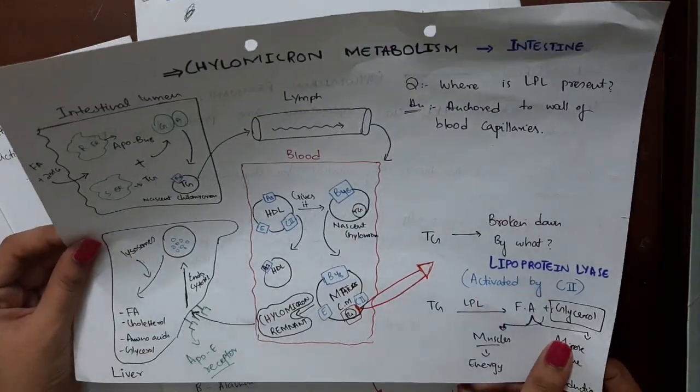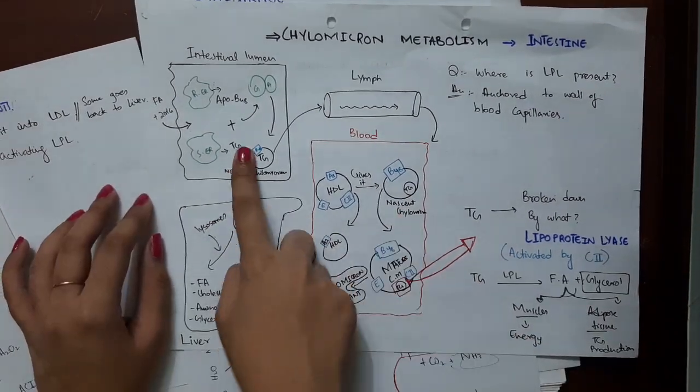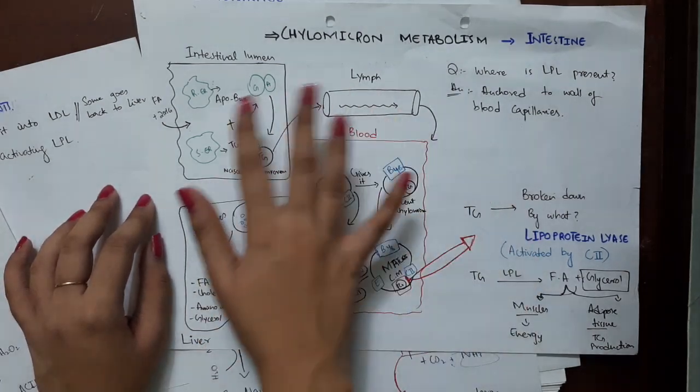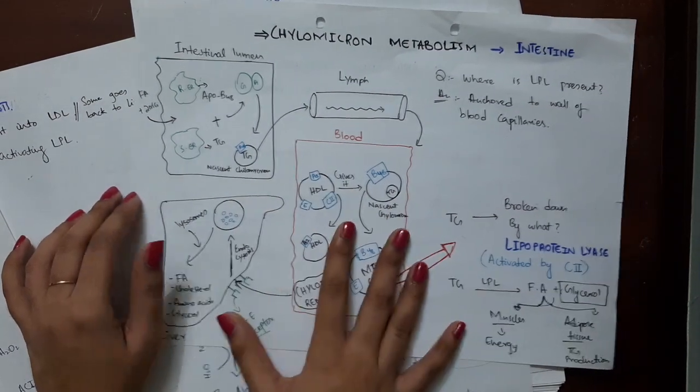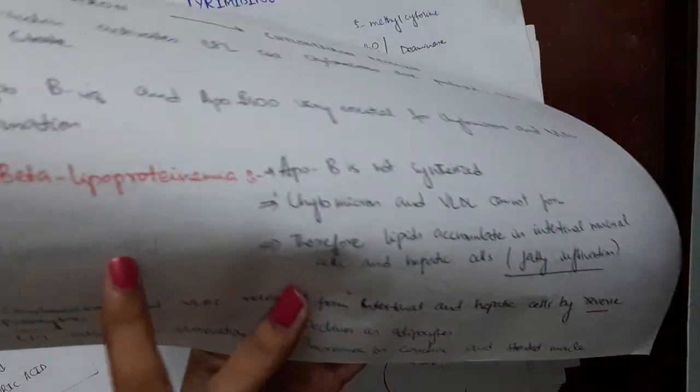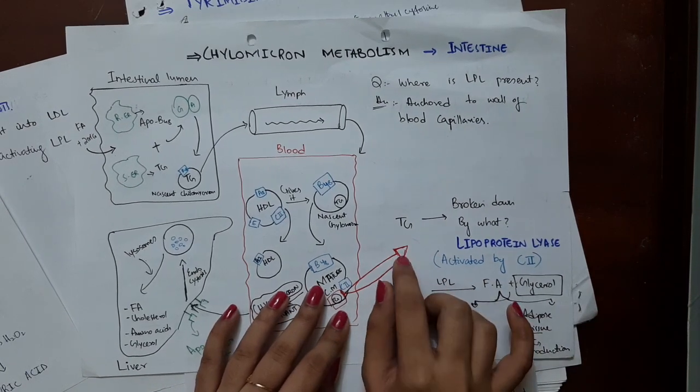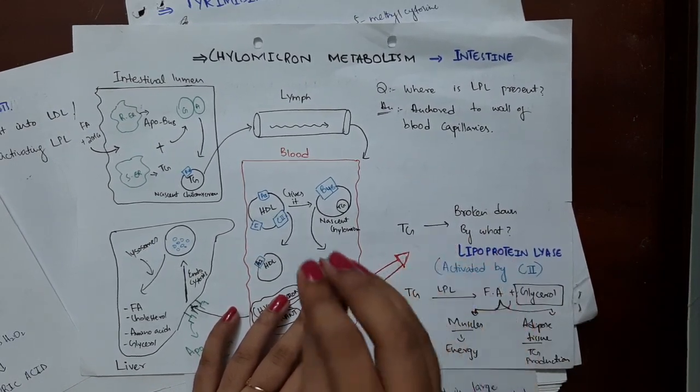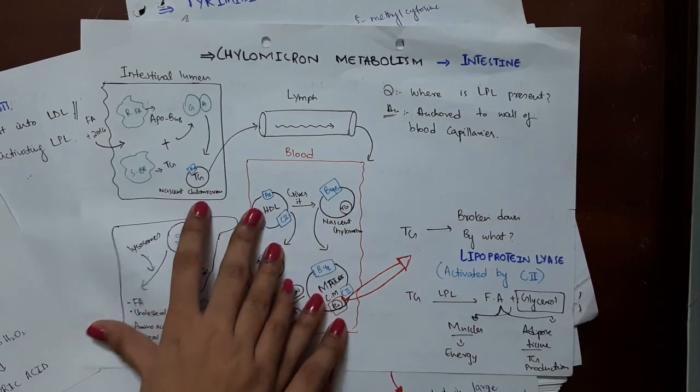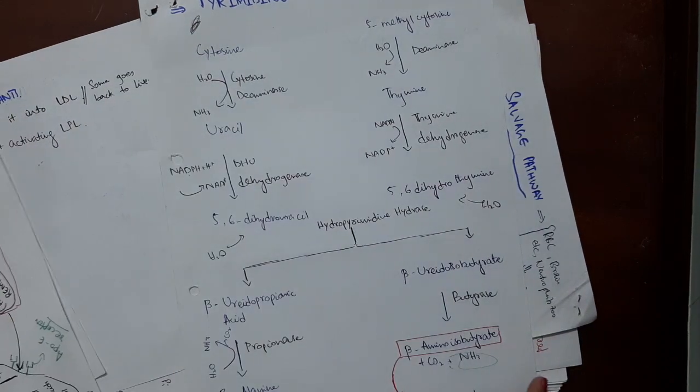Another example is chylomicron metabolism. As you can see, I have made intestinal lumen, blood, and liver pictures and I have done the entire metabolism very pictorially, very diagrammatically. Then I have added the high yield points that I thought were important. At the back I have written down the clinical relevance - the abetalipoproteinemia point. You see everything is in this one page. I know that whenever I get a question of chylomicron metabolism I'm confident enough that I'll be able to solve not only that question but also the clinically relevant point. Make sure that whatever you're writing down, you have your clinical point behind it.